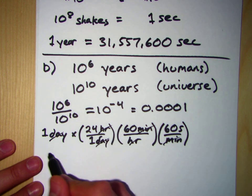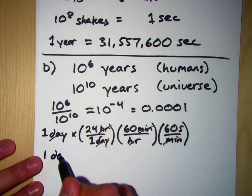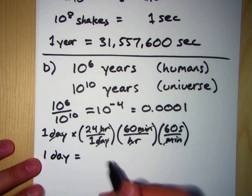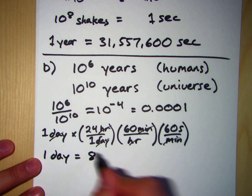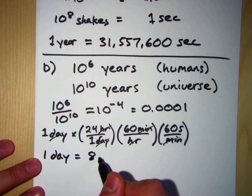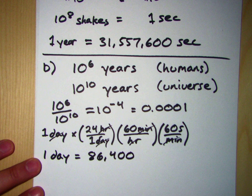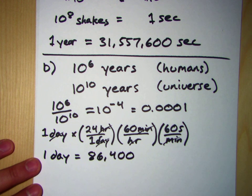And if we do this arithmetic right here, we get one day is equal to, let's go through this really quick here, 24, or one times 24, times 60, times 60, which means that in a day there are 86,400 seconds. So that's how many seconds there are in a day.